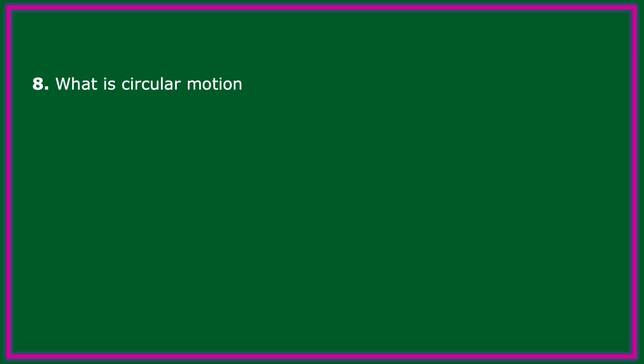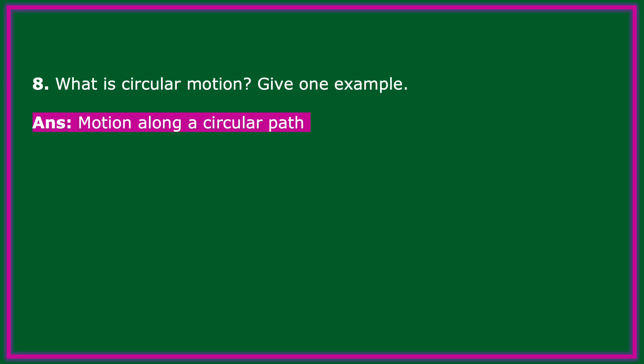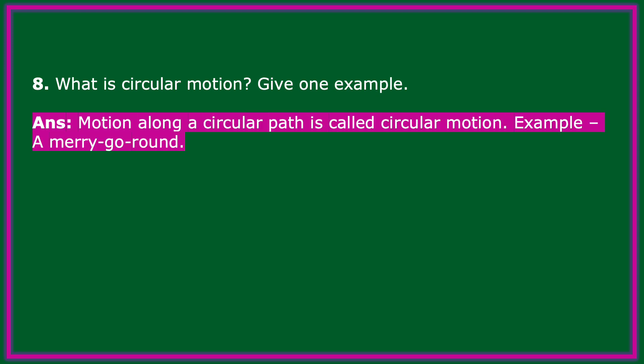What is circular motion? Give an example. Motion along a circular path is called circular motion. Example: a merry-go-round.